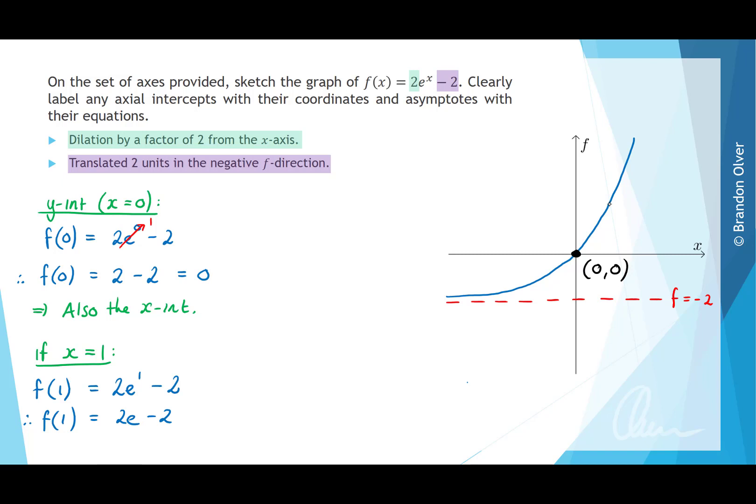So that corresponds to this point on the graph, which is at (1, 2e - 2). So that is the graph of f(x).